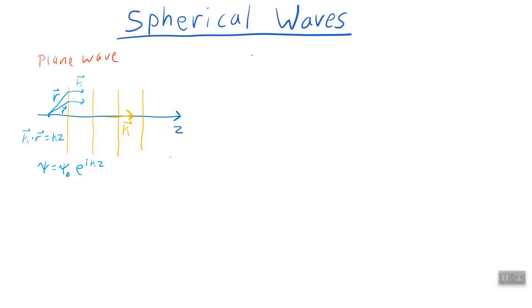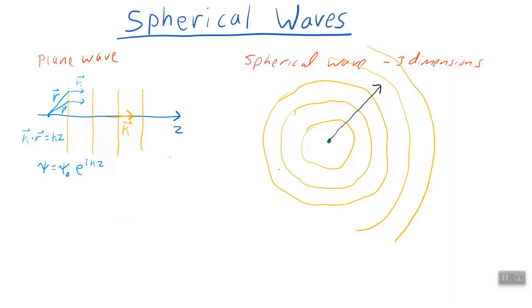So contrast this to a spherical wave, which is by nature in three dimensions. After all, it's a sphere. And when you consider a spherical wave, you have a source. Just make it that green point there. Waves emanate from that source as spheres. And a spherical wave function has to be depicted differently than the plane wave.